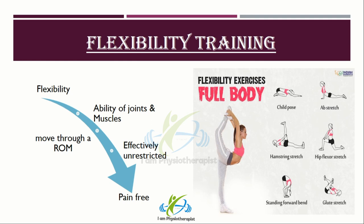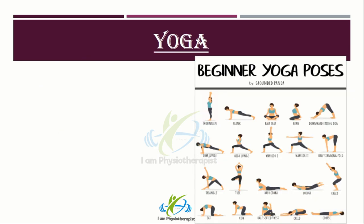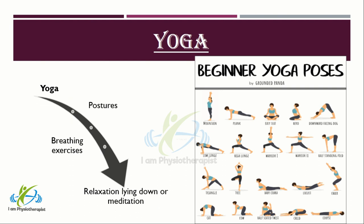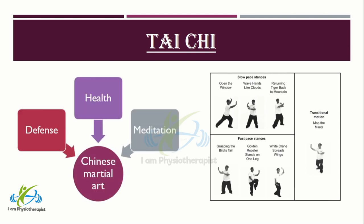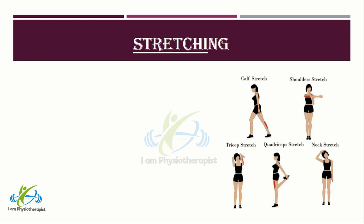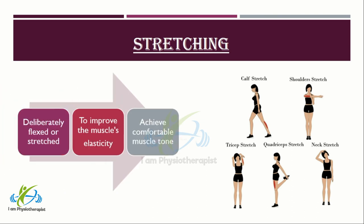Examples of flexibility activities include stretching, yoga, and tai chi. Yoga as exercise is a physical activity consisting mainly of postures, often connected by flowing sequences, sometimes accompanied by breathing exercises, and frequently ending with relaxation lying down or meditation. Tai chi is an internal Chinese martial art practiced for defense training, health benefits, and meditation. Stretching is a form of physical exercise in which a specific muscle, tendon, or muscle group is deliberately flexed or stretched in order to improve the muscle's felt elasticity and achieve comfortable muscle tone.